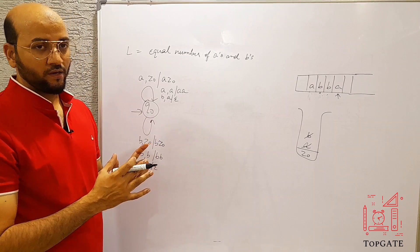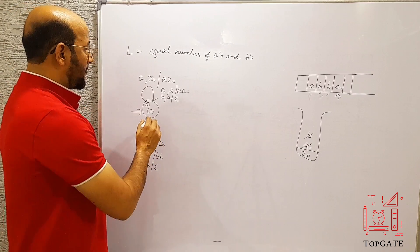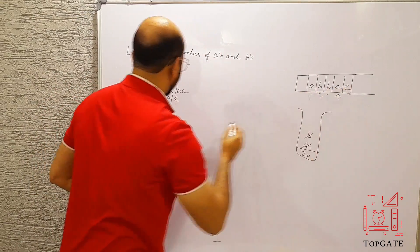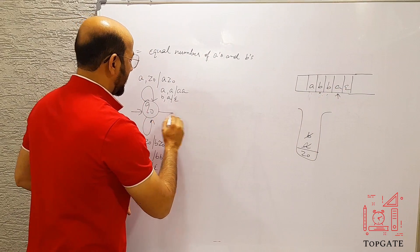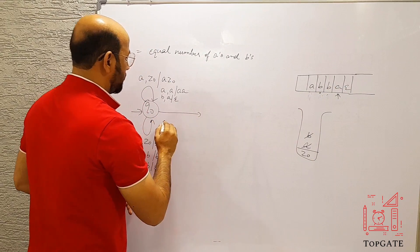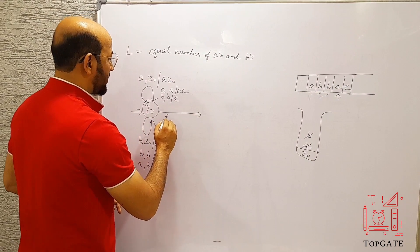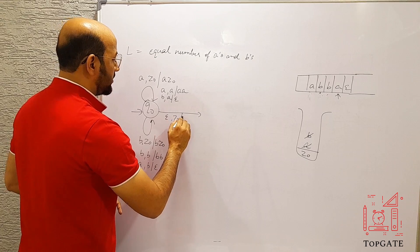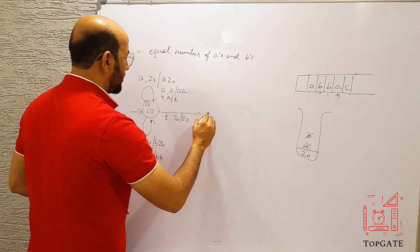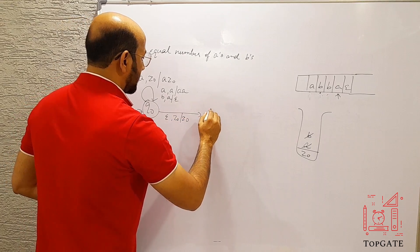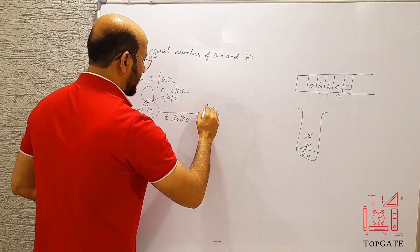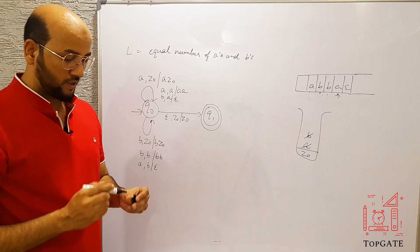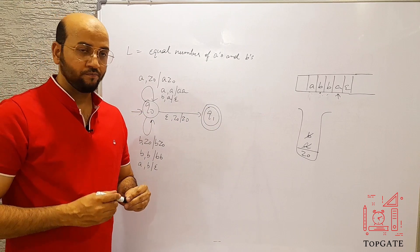Finally when the string ends, we write the move: ε, Z0 / Z0, and transition to state q1 which is the final state. Thank you so much.